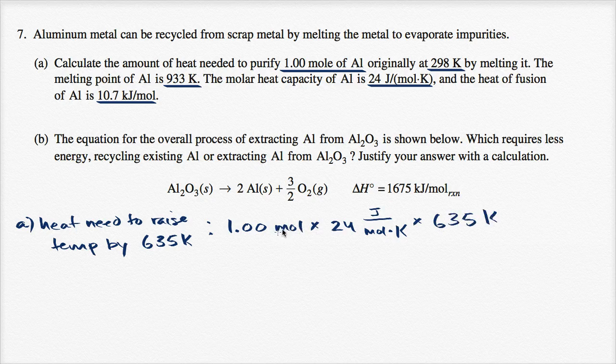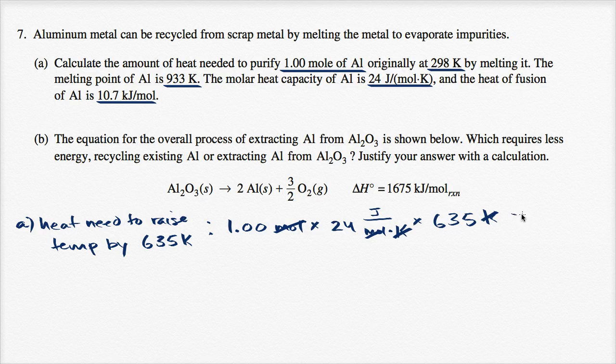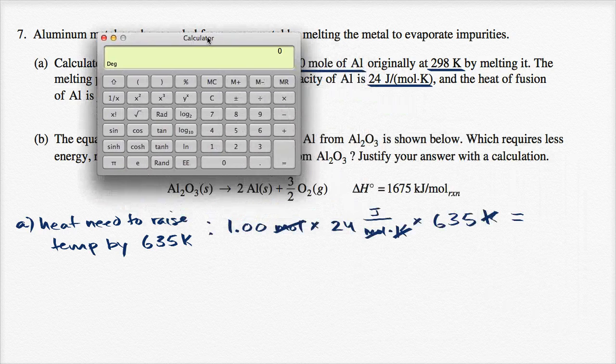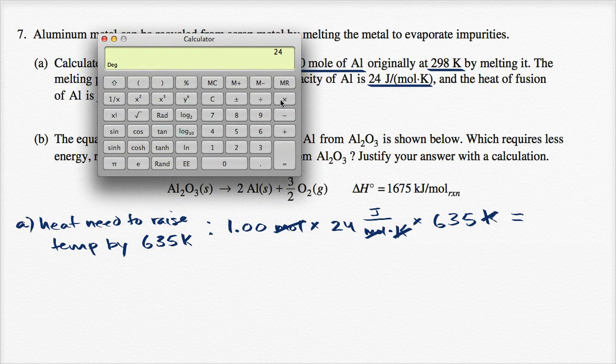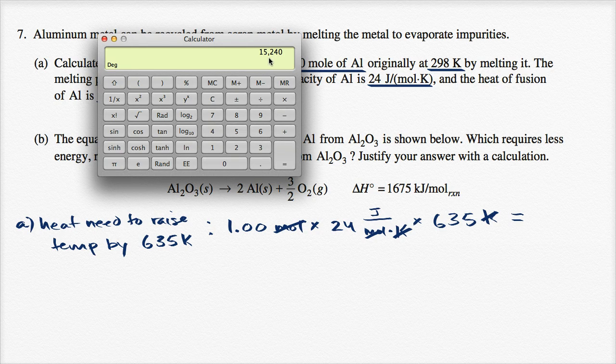The units work out. Moles cancel with moles, Kelvin cancels with Kelvin. Let me get my calculator out here. So 24 times 635 equals 15,240.